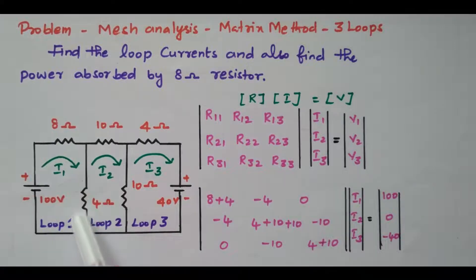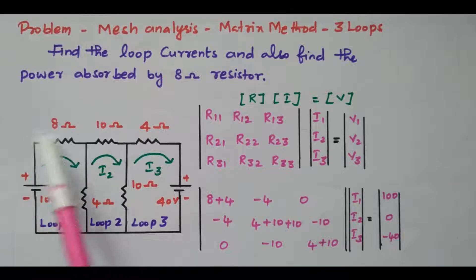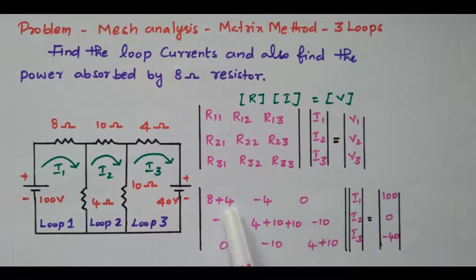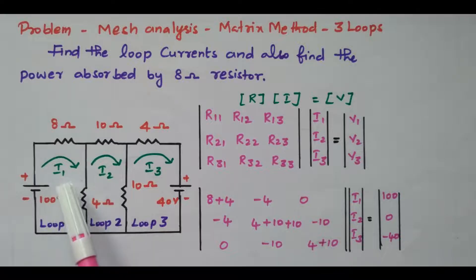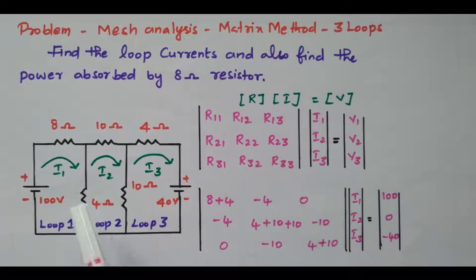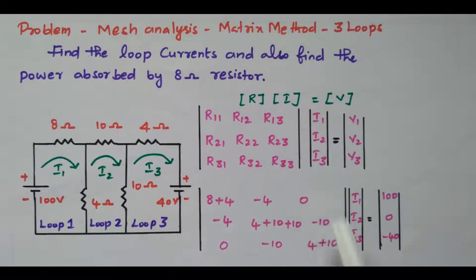R11 is the resistance in the first loop. In loop 1, we have an 8-ohm resistor and a 4-ohm resistor, so R11 = 8 + 4 = 12. What is R12? The resistance commonly available between loop 1 and loop 2 — this 4-ohm is connected commonly between loop 1 and loop 2, so R12 = −4. Other than the diagonal elements, all values are negative — only the diagonals are positive.